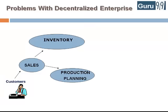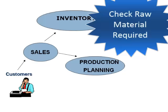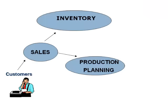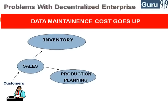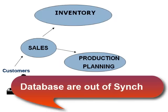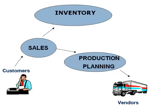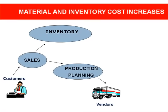Now suppose the product is out of stock and the sales team approaches the production planning team to manufacture the product for future use. The production planning team checks the availability of raw materials required. Raw material information is separately stored by production planning as well as the inventory department, so data maintenance cost goes up. A particular raw material is available in inventory, but according to the production planning team's database it is out of stock, so they go ahead and buy it. Thus, material and inventory costs go up.